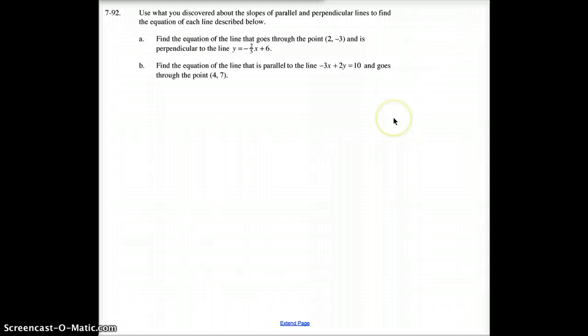Here, now we can start to use this information. Look at question A right here. Find the equation of the line that goes through point (2, -3), and is perpendicular to the line Y equals negative 2/5 X plus 6. Now, if you remember yesterday, yesterday you found how to find the equation of a line given a point and a slope. So if you know the point and you know the slope, you can find it. Well, they give you the point right here.